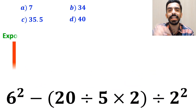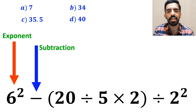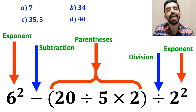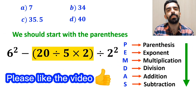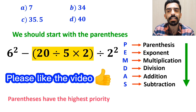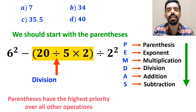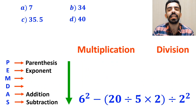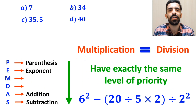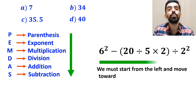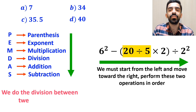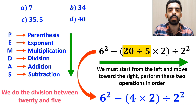As you can see on the screen, in this expression we first have an exponent, then a subtraction sign, followed by parenthesis, then a division sign, and finally another exponent. According to the PEMDAS rule, first we should start with parenthesis because parenthesis have the highest priority over all other operations. Inside the parenthesis, first we have a division sign and then a multiplication sign. It's very important to note that multiplication and division have exactly the same level of priority. In this situation, we must start from the left and move toward the right, performing these two operations in order. So first we do the division between 20 and 5, and this expression simplifies to 6 squared minus 4 times 2 inside the parenthesis, then divided by 2 squared. In the next step, we handle the multiplication between 4 and 2, and this expression simplifies to 6 squared minus 8 divided by 2 squared.